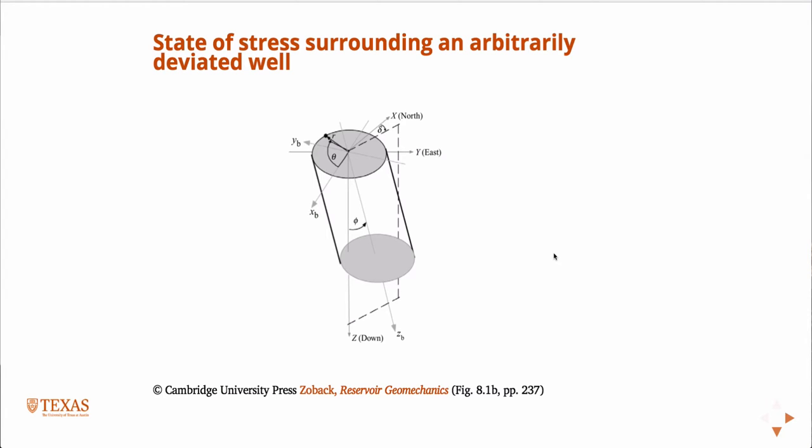On the Friday before spring break, we talked about stress and deviated wells. And so if you have a deviated well, you can define its orientation and angle of deviation with two angles. Delta, which would be the azimuth of the toe of the well. I say toe in the sense that it could be completely horizontal.